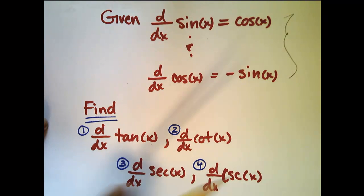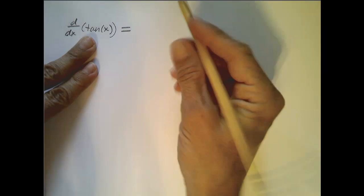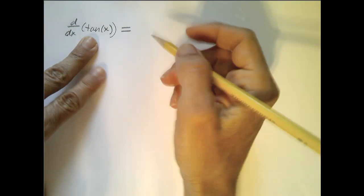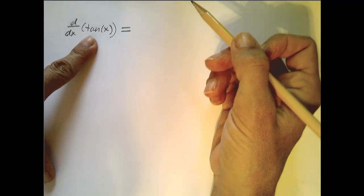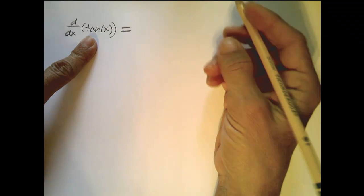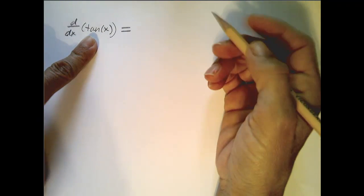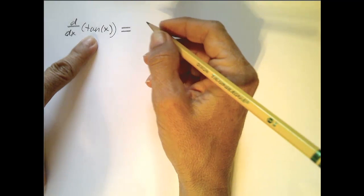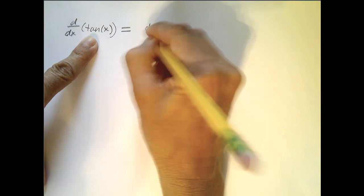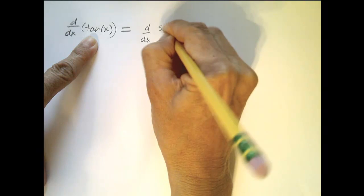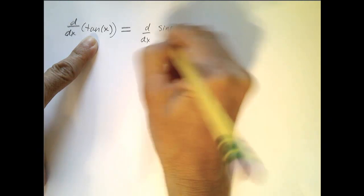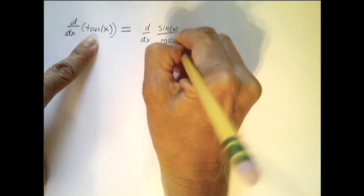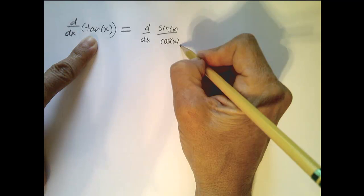Let's start first with the derivative of tangent. When we don't know the derivative of something we try to see if we can write it in terms of something that we do know the derivative of. Since we know tangent is equal to sine over cosine, I can rewrite this as the derivative of sine x over cosine x and then apply the quotient rule.